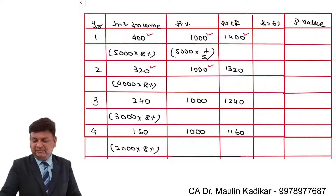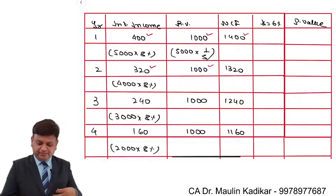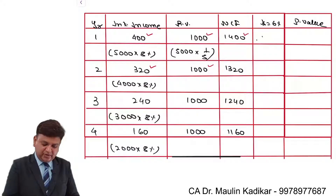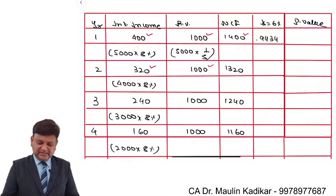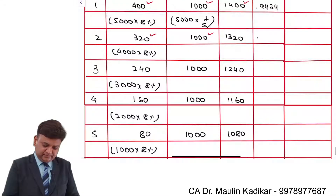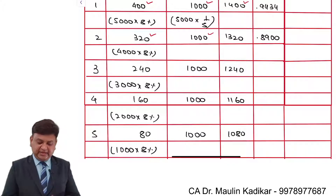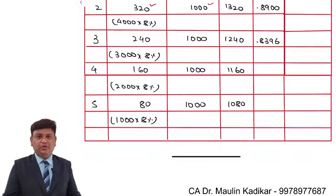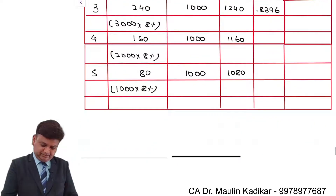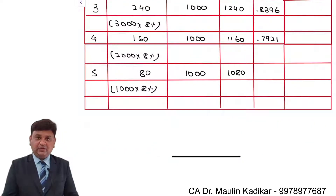The discount factors have not been given, so we have to compute them. At 6%: the first year factor is 0.9434, the second year factor is 0.8900, the third year factor is 0.8396, the fourth year factor is 0.7921, and the fifth year factor is 0.7473.